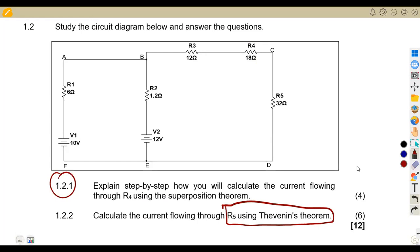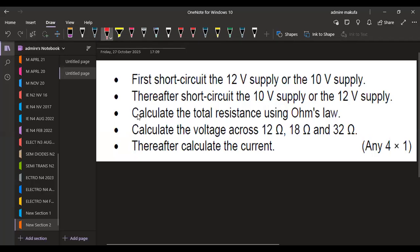Remember, superposition is where you short one voltage source — either the 10 volt or the 12 volt. You calculate the currents, then do the same for the other source and calculate those currents, then combine them at the end depending on the direction of current flow. In short, you first short-circuit the 12-volt supply, or short the 10-volt supply, depending on which one you want to work with first. Then after shorting, if you start with the 12 volt, you work with the 10 volt on the other part. You calculate the total resistance using Ohm's law, the voltages and the currents, then you superimpose.